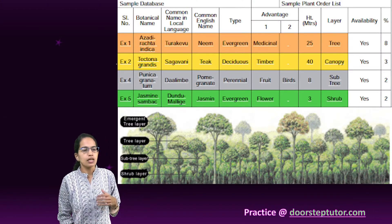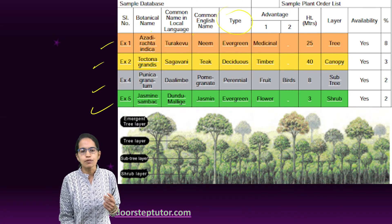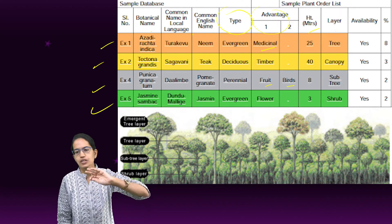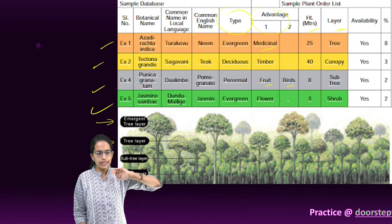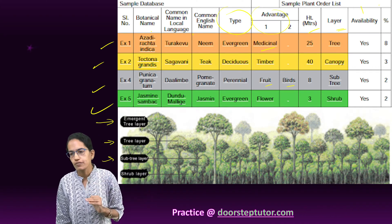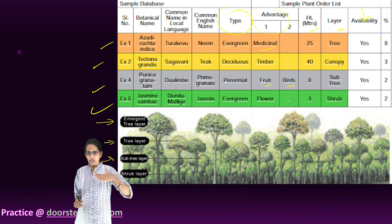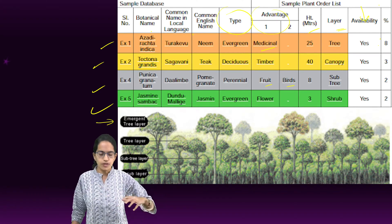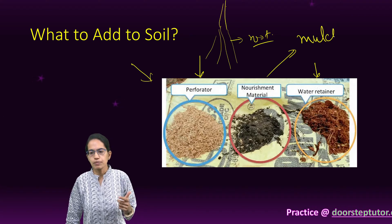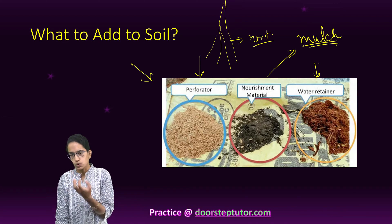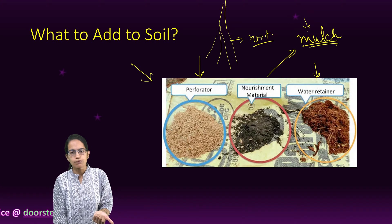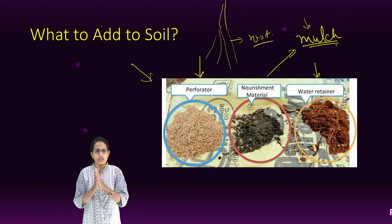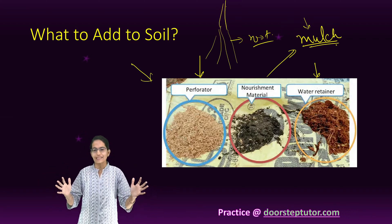A sample database is created listing various species with their botanical name, local name, English name, type, advantages such as medicinal or fruit-bearing, bird attraction, height, and the layer they occupy — emergent, tree layer, subtree layer, or shrub layer. Native varieties are identified across these layers, soil quality is assessed, and the ground is covered with thick mulch as a major nutritional material along with organic fertilizers, vermicomposting, goat manure, cow manure, and young saplings. This technique is extensively used in India today.